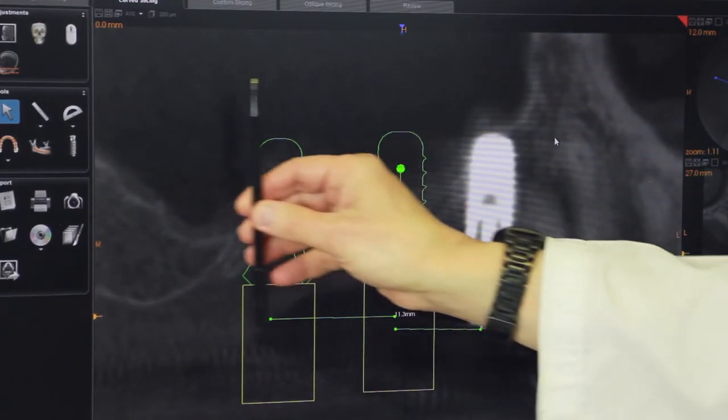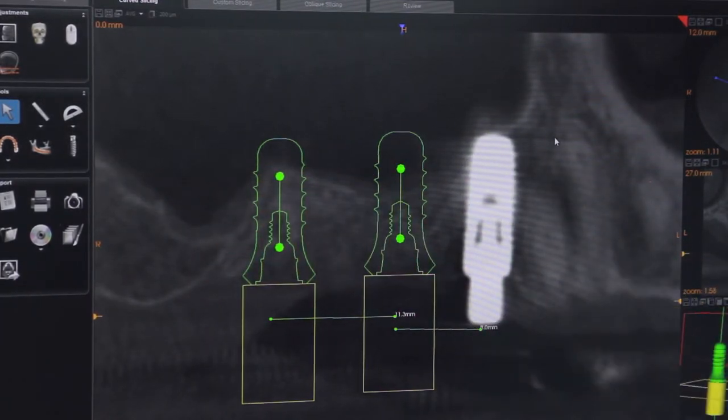So it's imperative that you have a three-dimensional scan of the upper jaw bone just like with the lower jaw bone to avoid these critical structures.